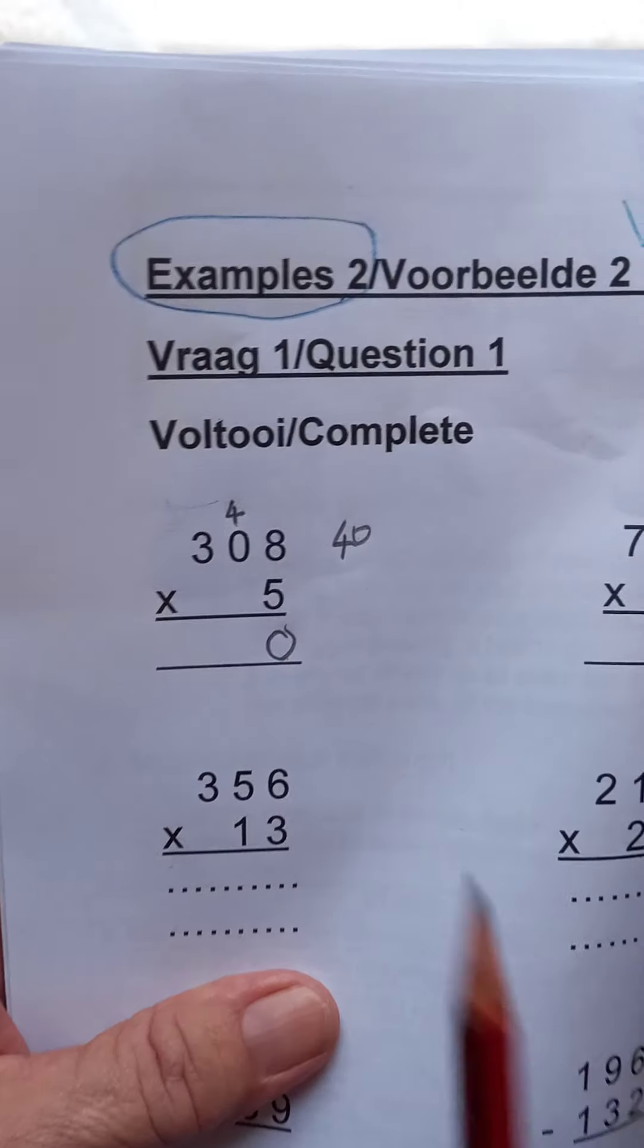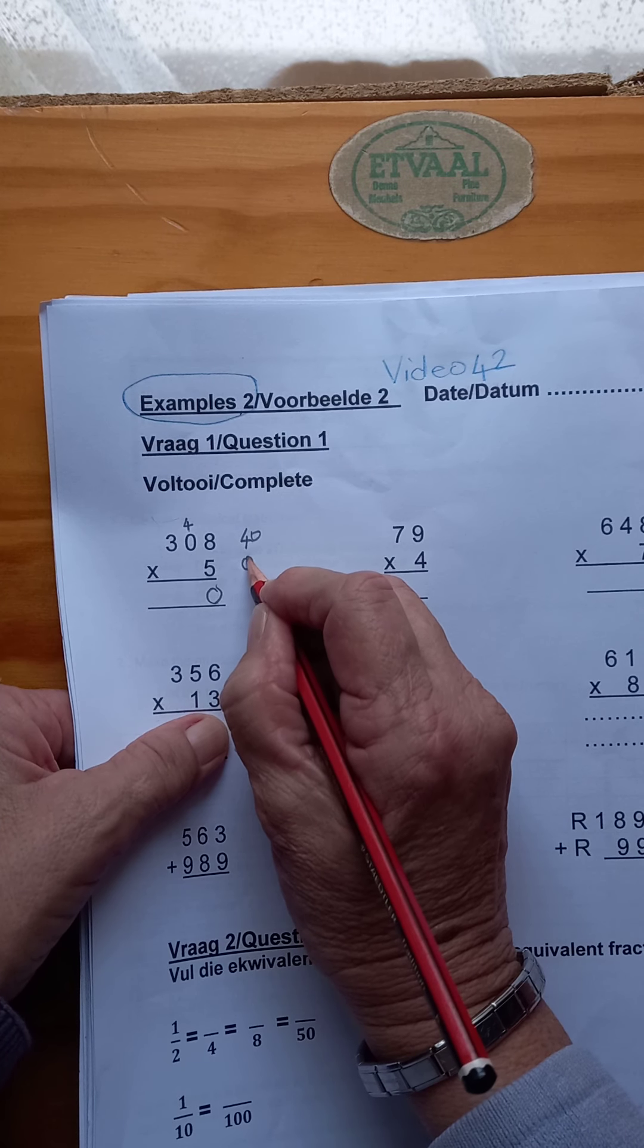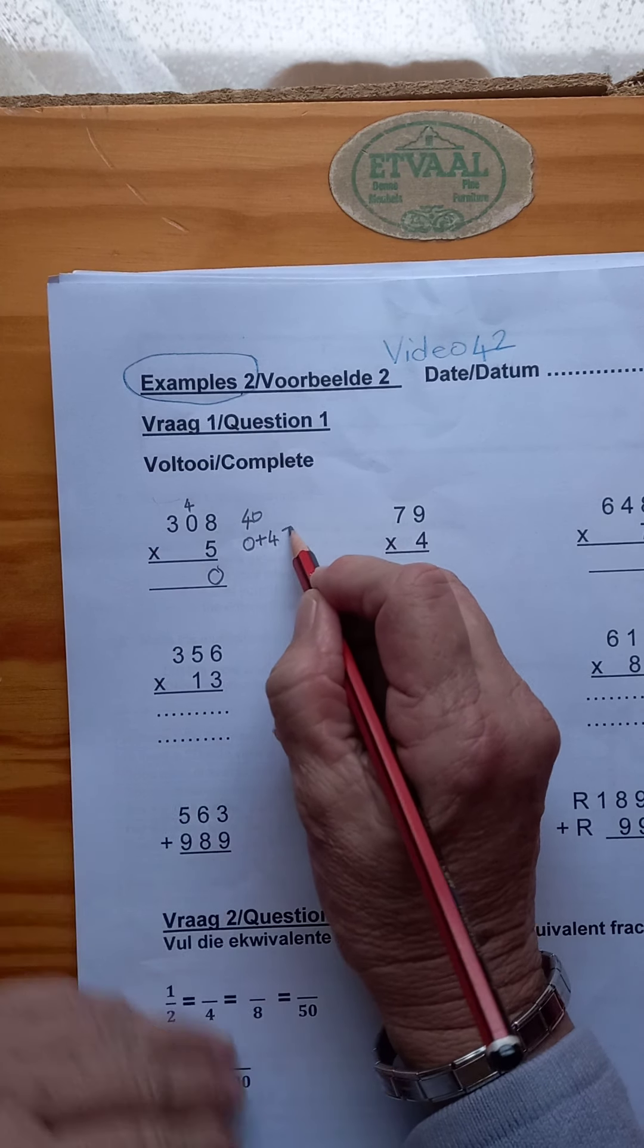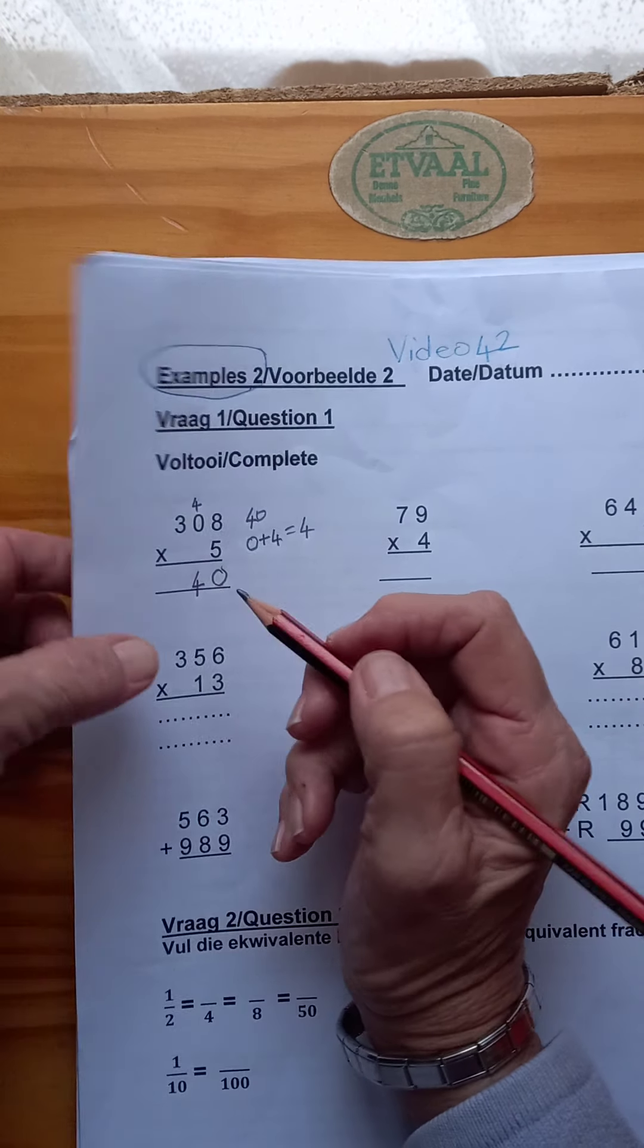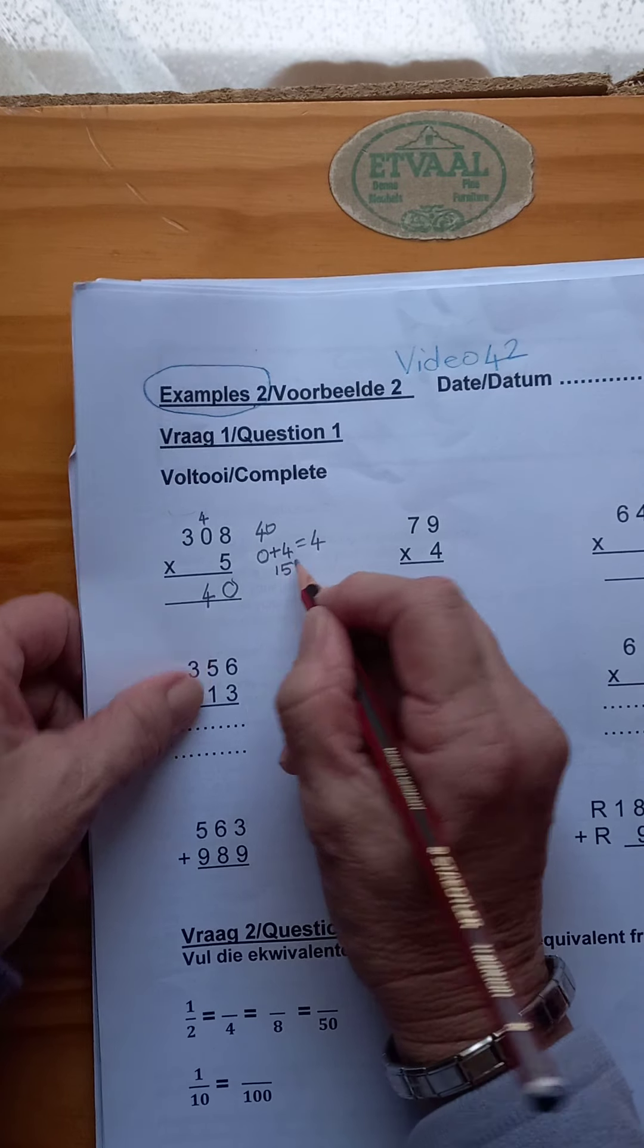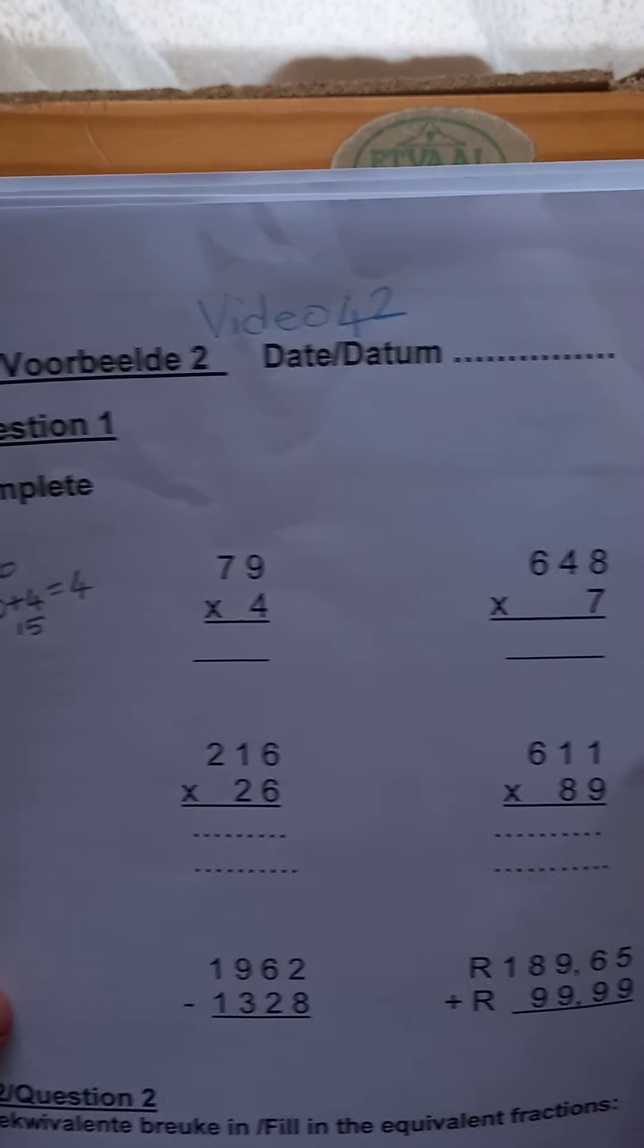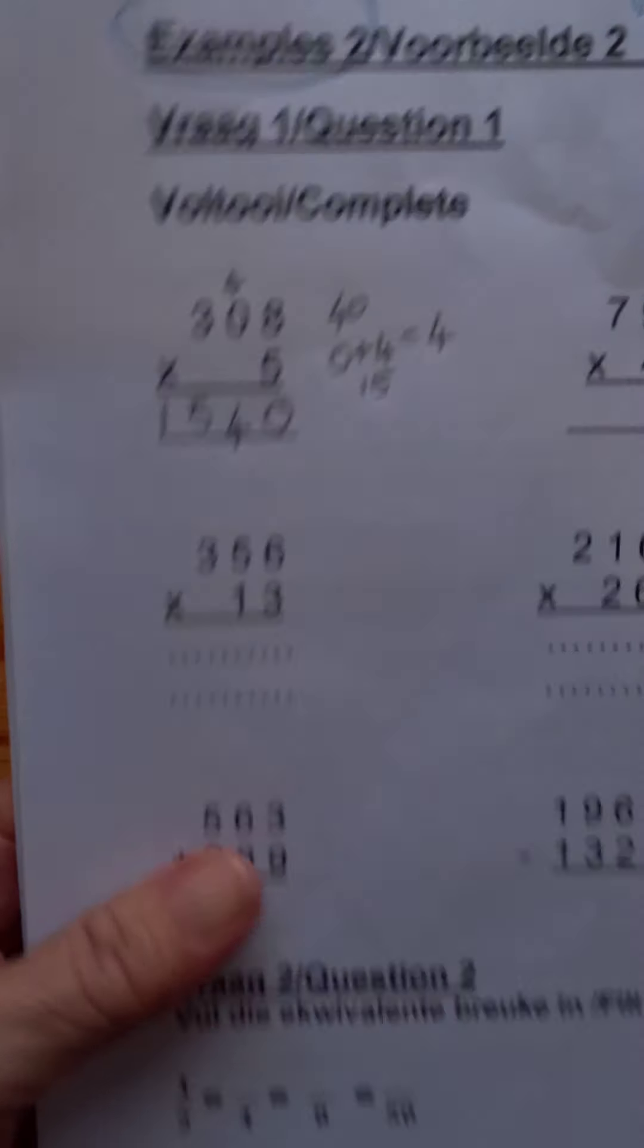Then 5 times 0 is 0, plus the 4 equals 4. So it is 4. And then 5 times 3 is 15, so the 5 goes there and the 1 goes there. Then you complete the row on your own and see what happens there. Then I'm going to do this one for you quickly, just a reminder of it.